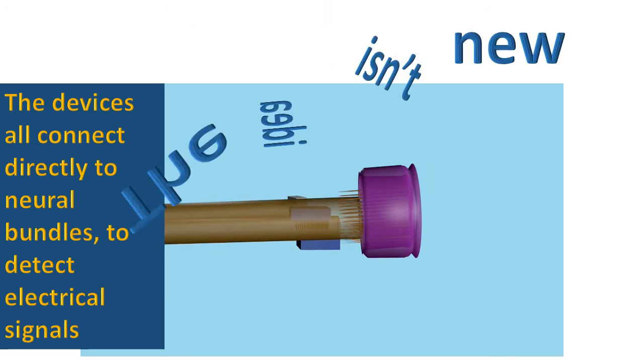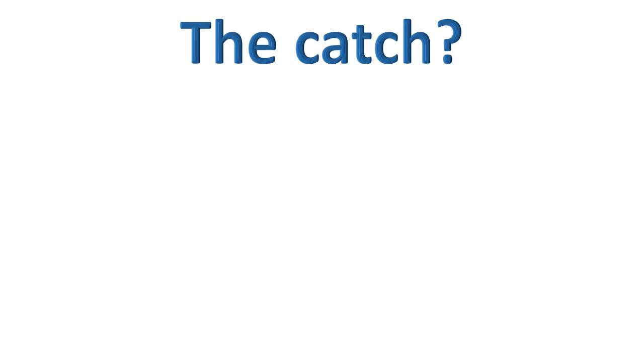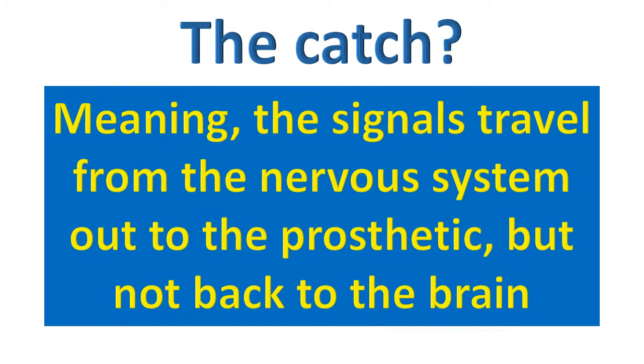Unfortunately, despite appearances, there is a catch. Most of this technology only works one way. Meaning that the signals travel from the nervous system out to the prosthetic, but not back from the prosthetic to the brain. That said however, do keep in mind that the electrical signals from the brain are in fact being used for motor control of the prosthetics.